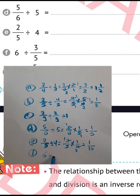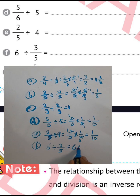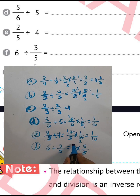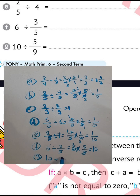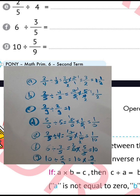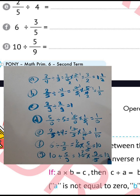Next: 6 divided by 3 over 5. Write 6 and convert to multiplication, raising the inverse of 3 over 5 to get 5 over 3. Then 6 divided by 3 equals 2, and 2 times 5 equals 10, so the result is 10. Letter g: 10 divided by 5 over 9. Write 10 and convert from division to multiplication, writing 9 over 5. Then 10 divided by 5 equals 2, and 2 times 9 equals 18, so the result is 18.